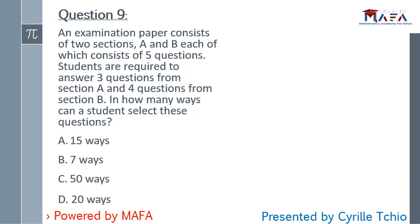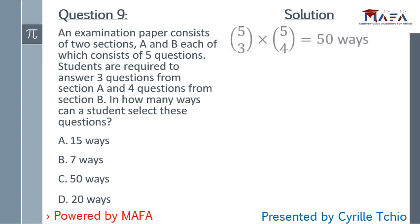Question nine: an exam paper has two sections A and B, each with five questions. Students must answer three questions from section A and four from section B. The number of ways to select is C(5,3) × C(5,4), since we use combinations for selection and multiply because both selections are required simultaneously. This equals 50 ways. The answer is C.